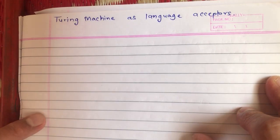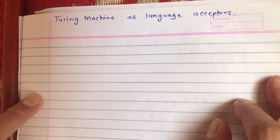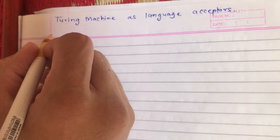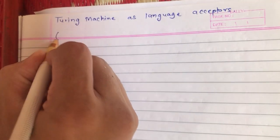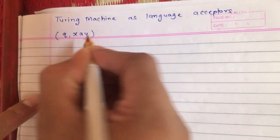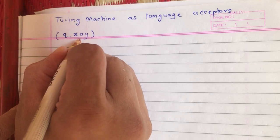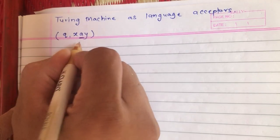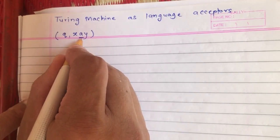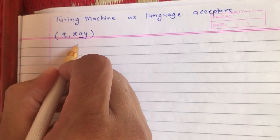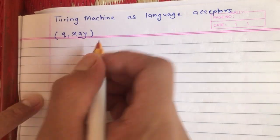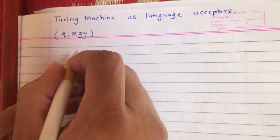Whenever we solve a string for its acceptance we require an ID notation. The ID notation of a Turing machine is written with a state followed by a configuration in the form x A y, where there is an underline representing the tape head. This symbol A is the one on which the tape head is currently standing, represented with an underline below it.